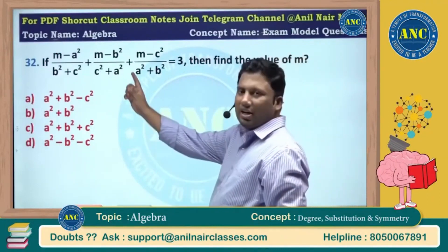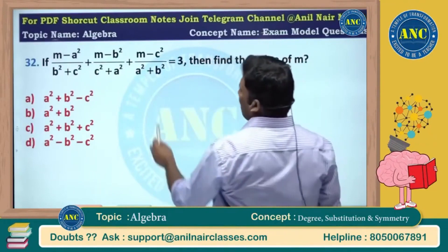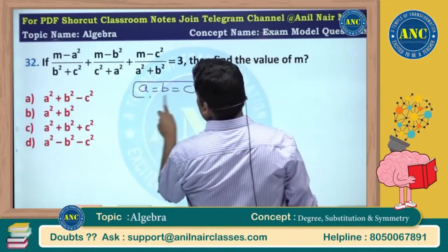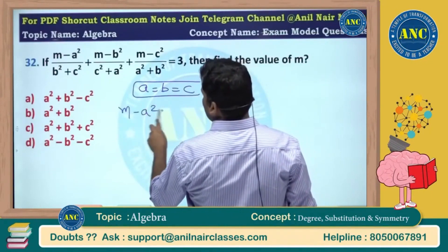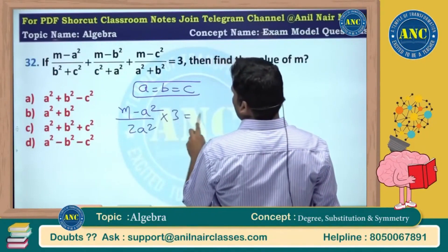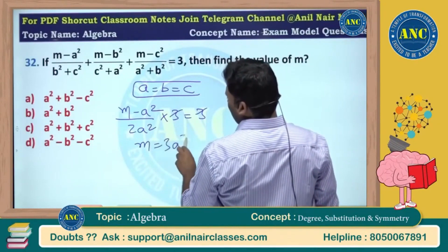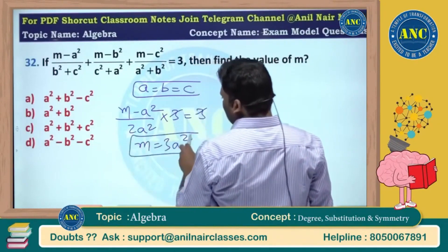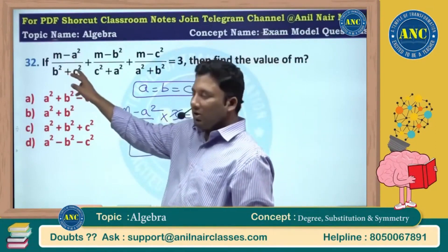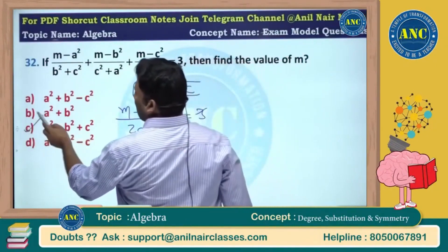Very easy question. b is replaced with c, c is replaced with a, so make a equivalent to b equivalent to c. If I make it m minus a square by 2a square into 3 equivalent to 3, so m equivalent to 3a square. The first term: m minus a square by 2a square, there are 3 terms, into 3 equivalent to 3, giving 3a square. So option is c.